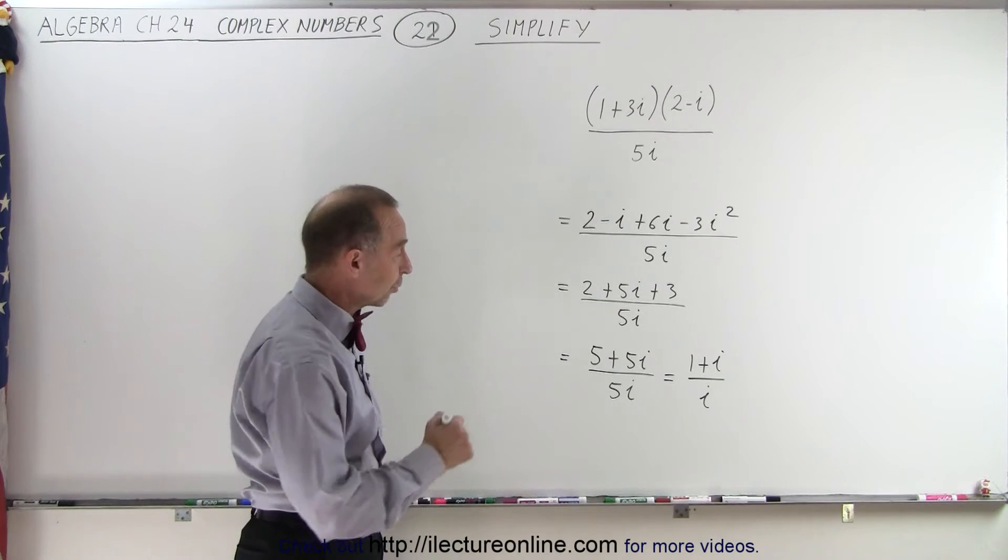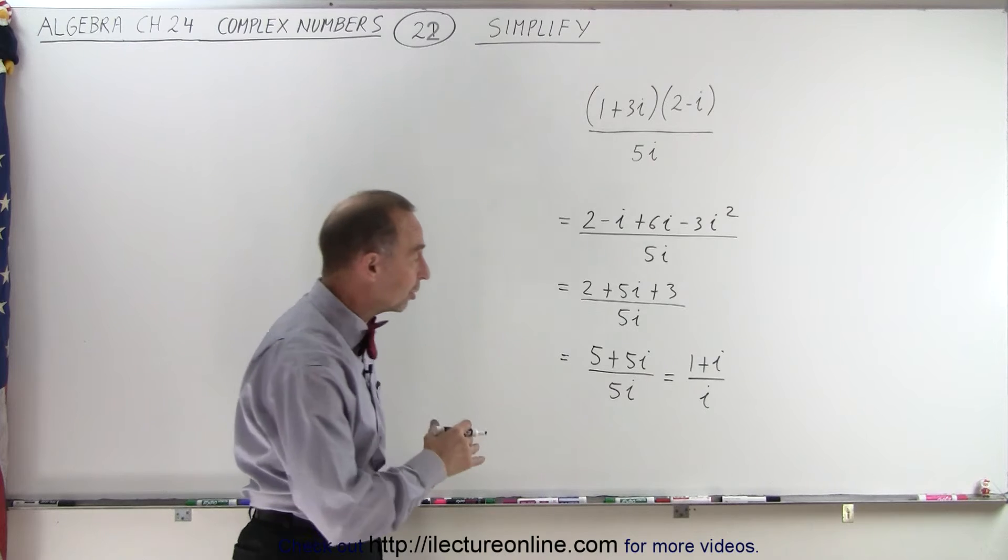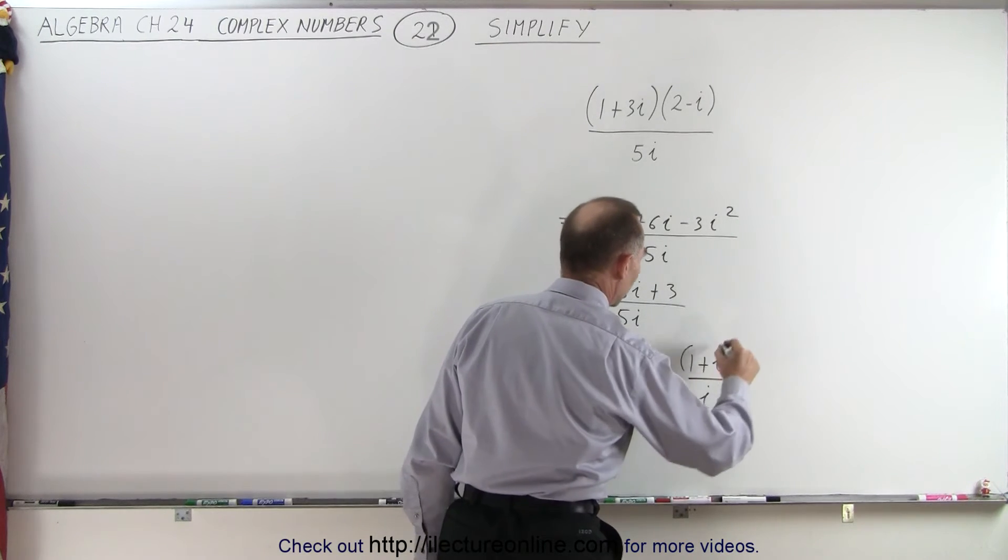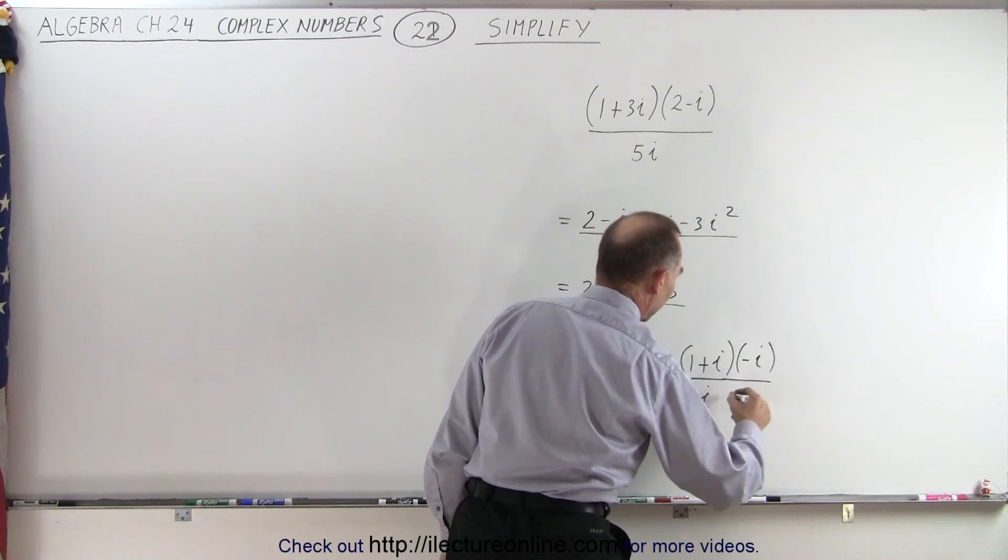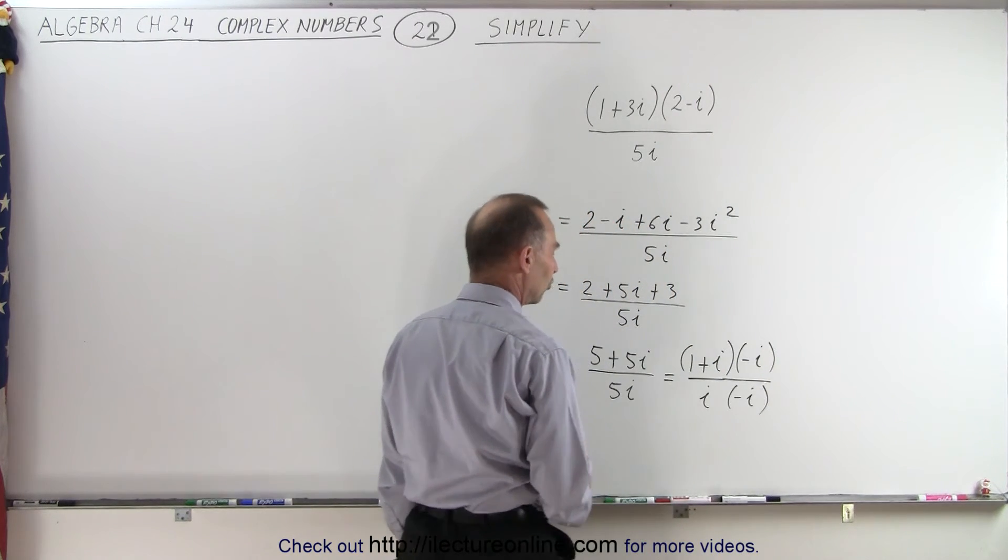So now what we're going to do is we're going to multiply both the numerator and the denominator by the complex conjugate of the denominator. That means we're going to multiply the numerator by negative i, and we're going to multiply the denominator by negative i. Notice that's equal to 1, so nothing has changed.